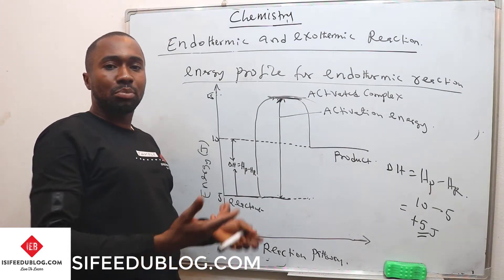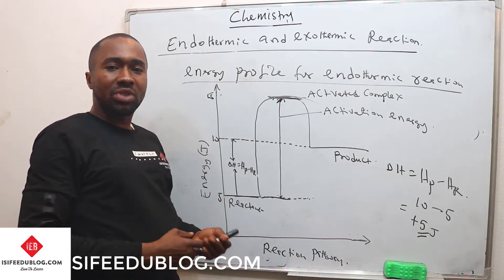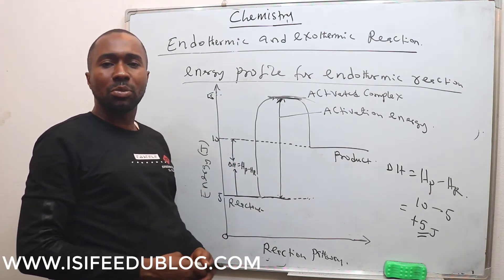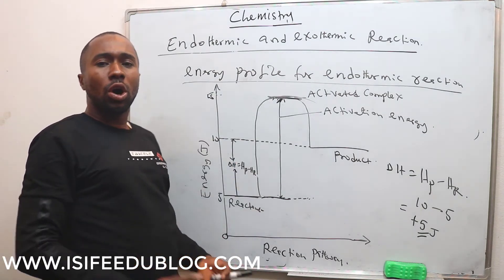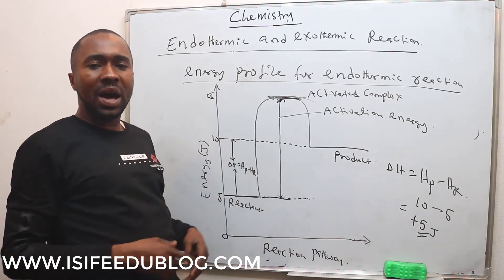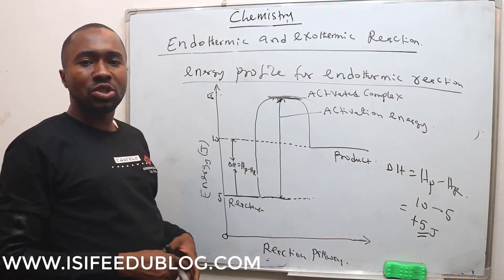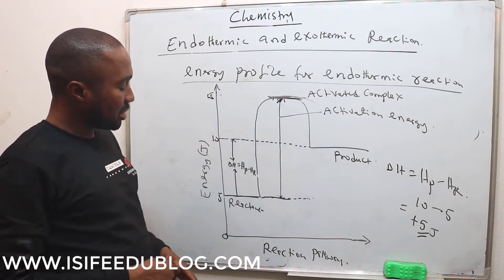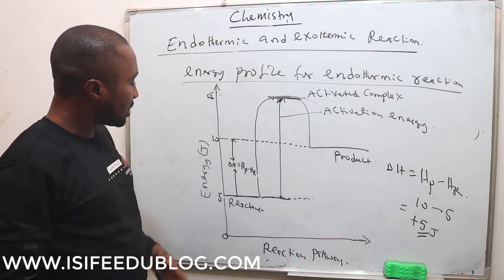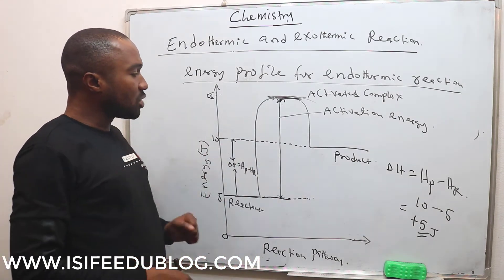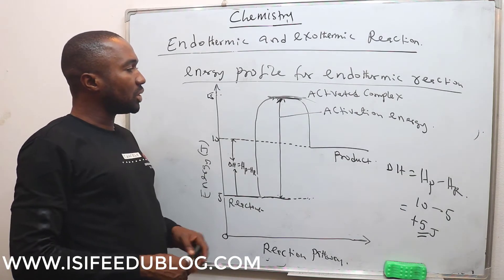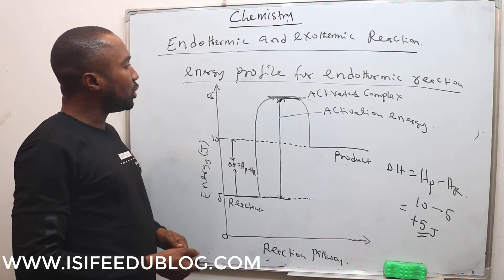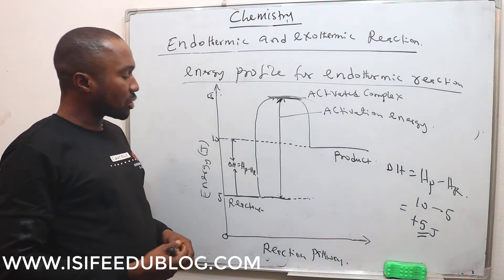The transition state is the point at which the reactant can either go ahead to form the product or rebound back as an unchanged reactant. This is the energy profile for the endothermic reaction.